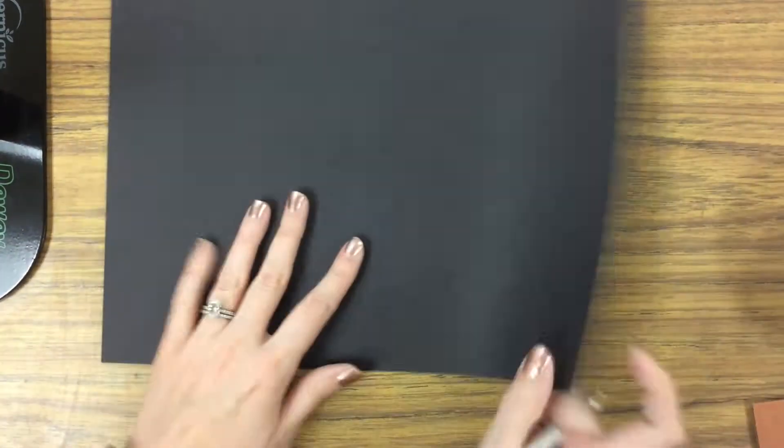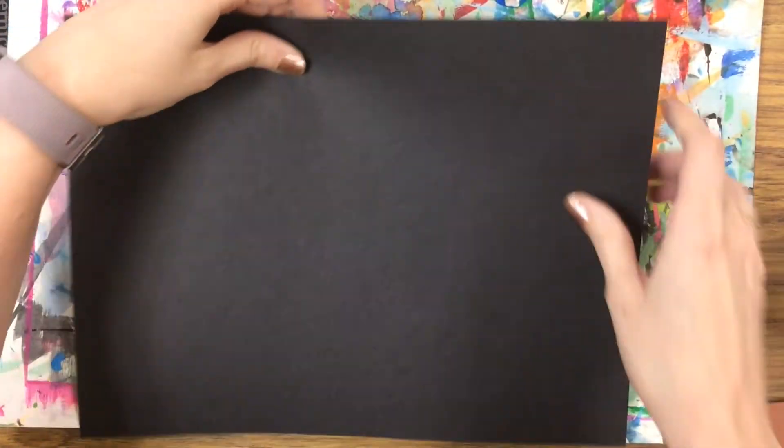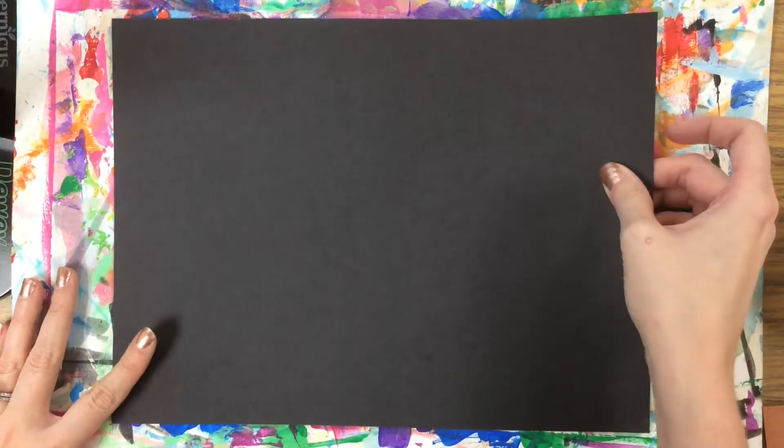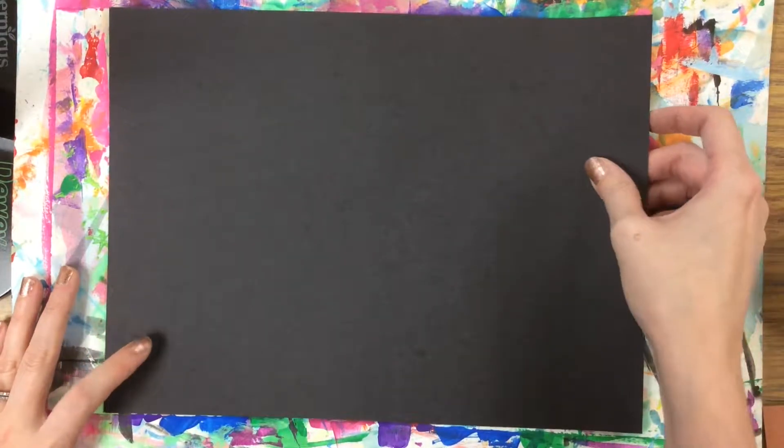Okay, then flip it over, and we're now going to put it onto a placemat so that when we're doing some painting with the printmaking, we don't get it all over the table. It's going to make cleanup a lot easier.